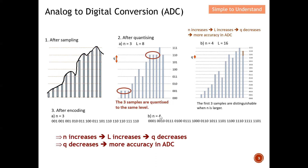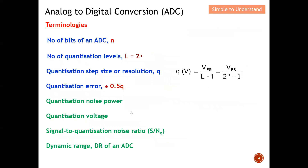Today we are going to further discuss: what is quantization noise power and voltage, how to determine the signal-to-quantization noise ratio, and the dynamic range DR of an ADC. Before we end this video, I also have an example to calculate all of these analog to digital conversion parameters so you can fully understand them.